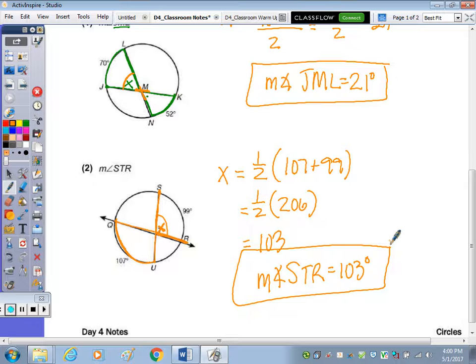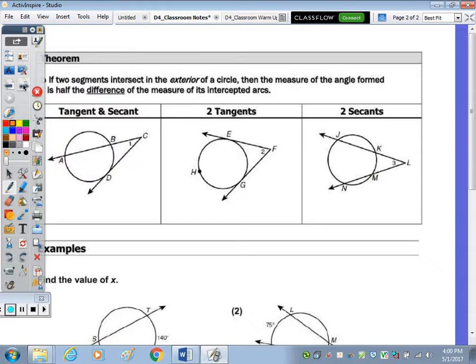On the back side, it says if the two segments intersect in the exterior of a circle, then the measure of the angle formed is half the difference of the measure of the arc. So if we follow the segments,